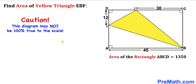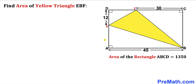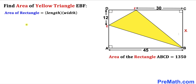Note that this figure may not be 100% true to scale. Let's get started. We'll focus on rectangle ABCD and label side BC as X units. Now let's recall the area of a rectangle formula: Area equals length times width.